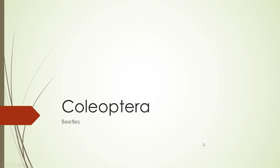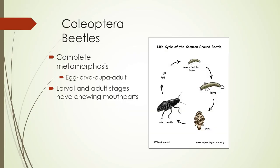Coleoptera order, or beetles. Beetles have complete metamorphosis: egg, larva, pupa, and adult. The difference between them and some of the other insects that have complete metamorphosis is their mouth parts are chewing at all stages.